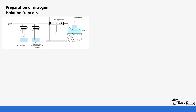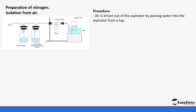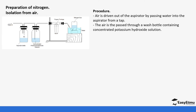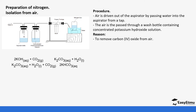One simple setup for isolating nitrogen from air works as follows: water is allowed into the aspirator, which pushes the air out of the aspirator into the tube. The air then passes through concentrated potassium hydroxide solution and then through heated copper turnings, and finally the gas is collected. Air is driven out of the aspirator by water from a tap.